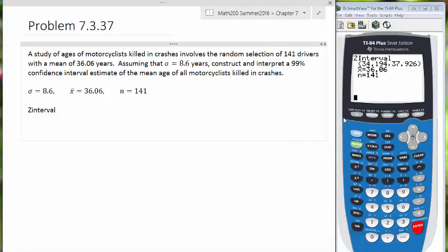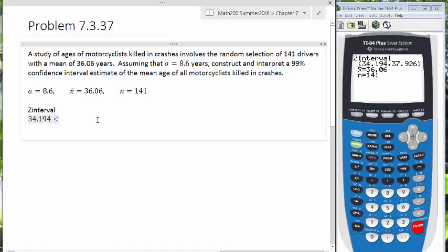We'll write it using our interval notation using the population parameter mu. So we'll start off with 34.194, and then we'll use the less than sign. And then we'll need to put the population parameter mu, and then another less than sign, and then our upper limit is 37.926. So here is our confidence interval.